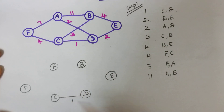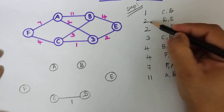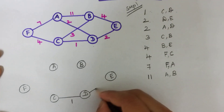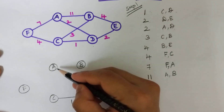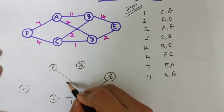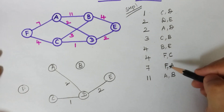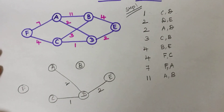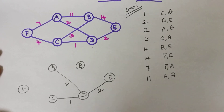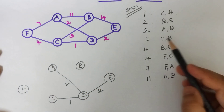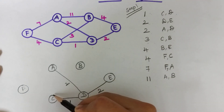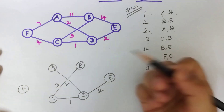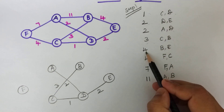We are going to consider the first weight, which is one between C and D. I have made a connection between C and D with weight one. The next minimum weight is two between D and E, so we make that connection. Same way, check A and D — the weight is two again, so we continue. When doing this, you also want to make sure you are not forming any cycle. After the twos, the next minimum weight is three between C and B, so we connect C and B.